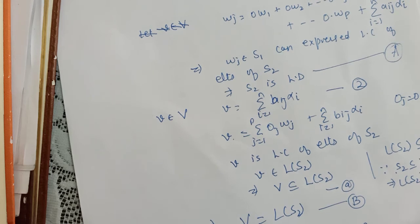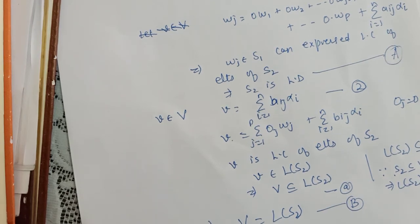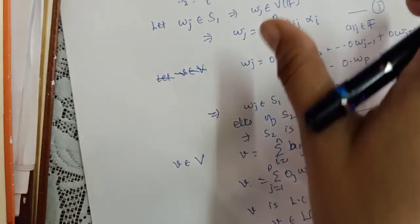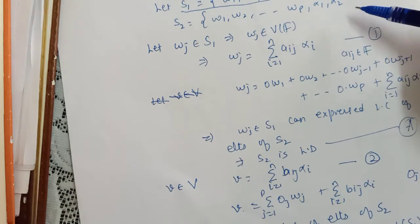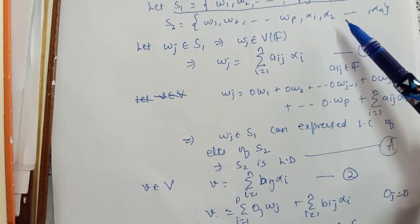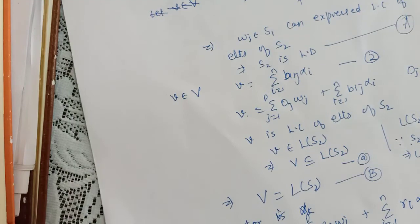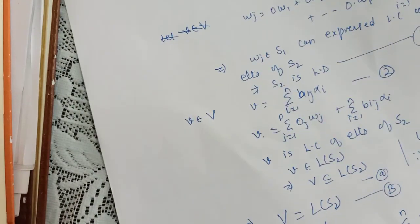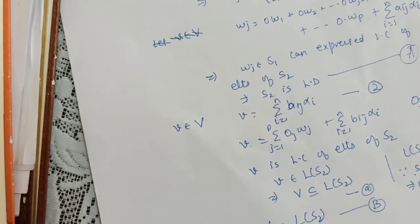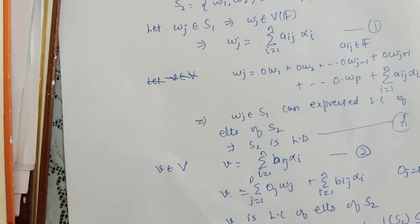So αₖ = Σ βⱼ wⱼ + Σ γᵢ αᵢ (i ≠ k), where βⱼ's and γᵢ's are from field F. We now drop αₖ from S₂ and form a new set S₃ = {w₁, ..., wₚ, α₁, ..., αₖ₋₁, αₖ₊₁, ..., αₙ}. Using the same argument, we can show that span(S₃) = V.